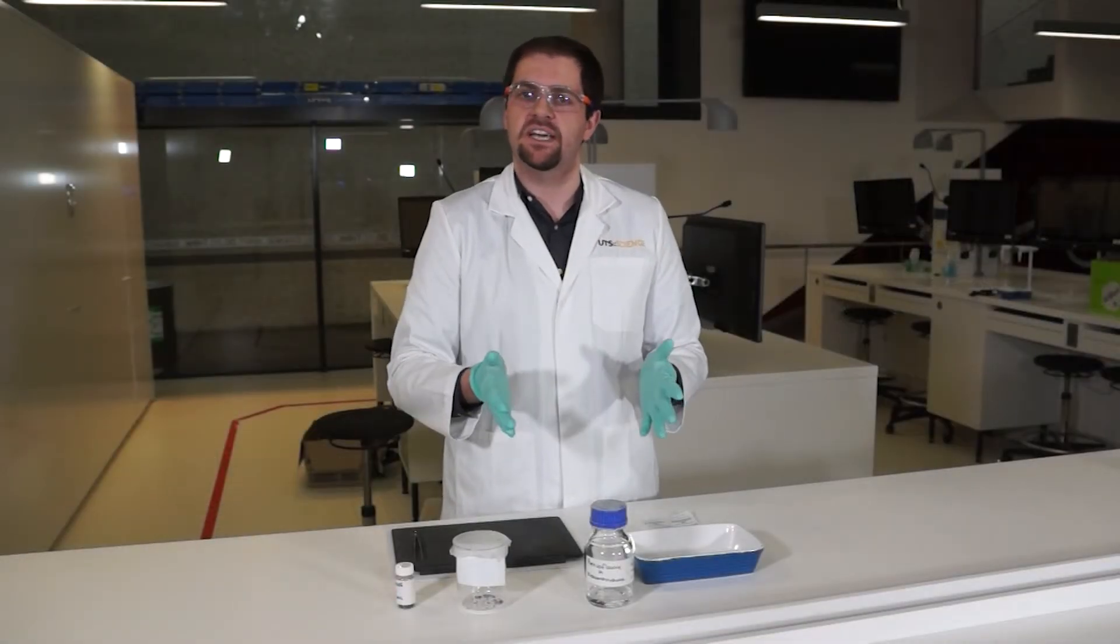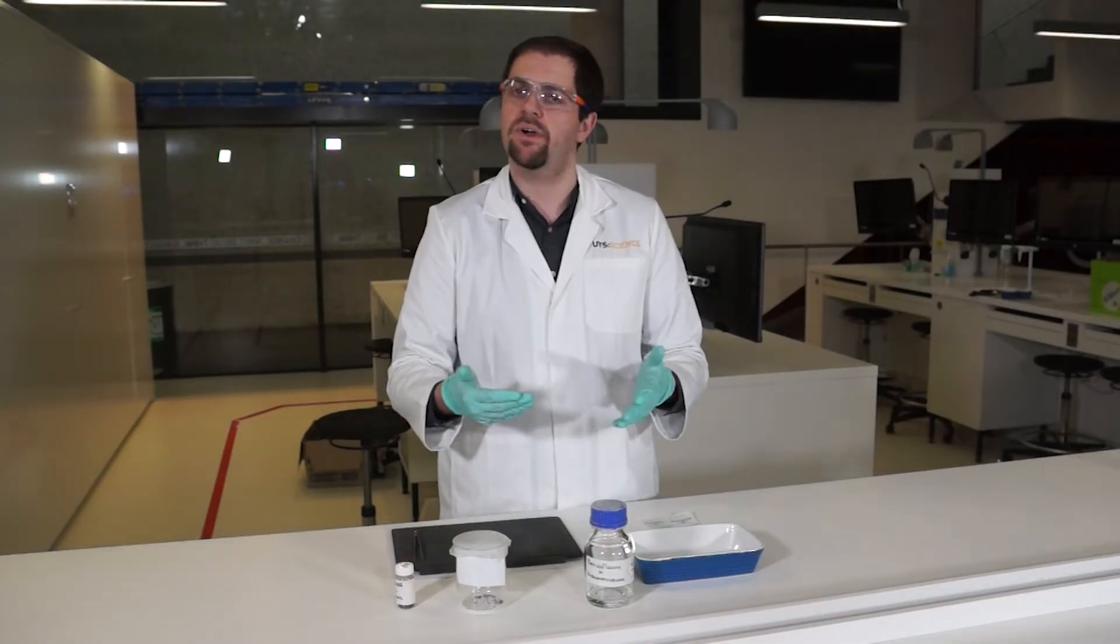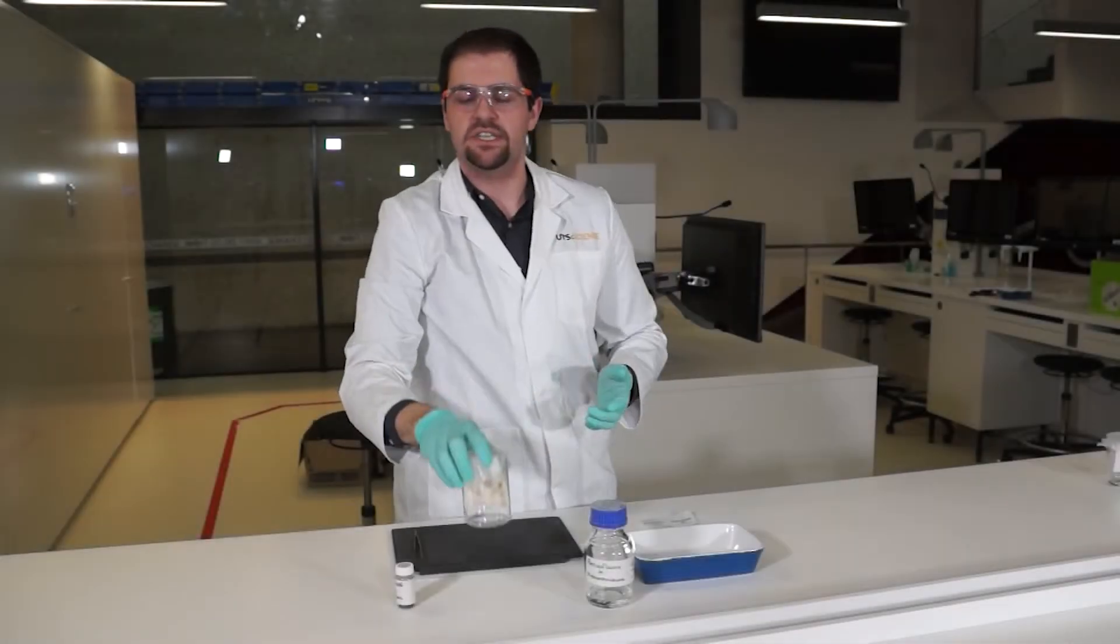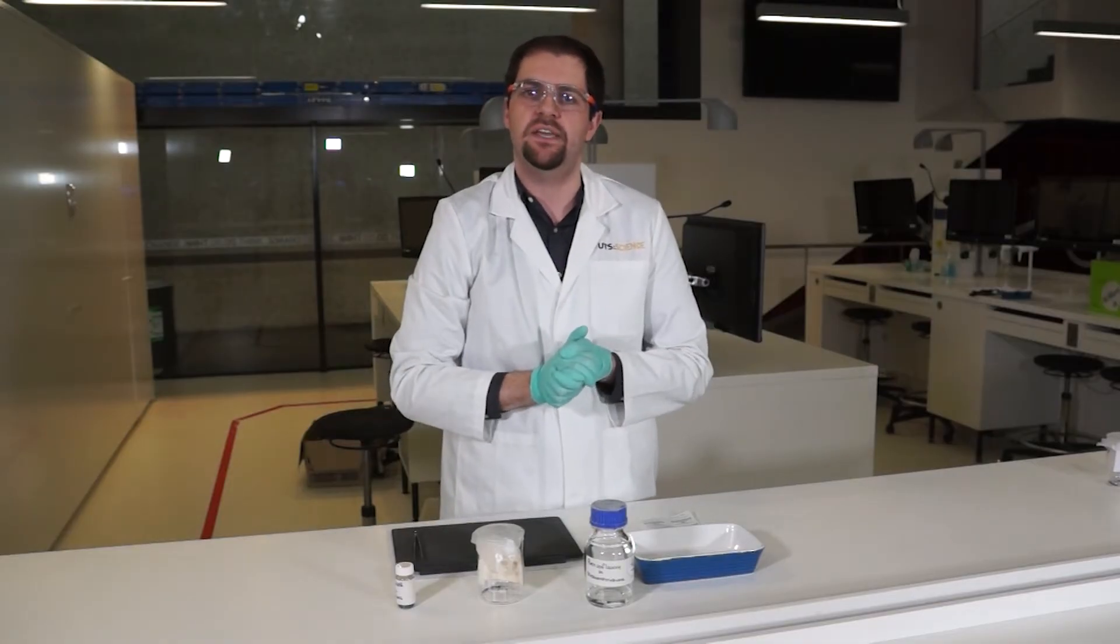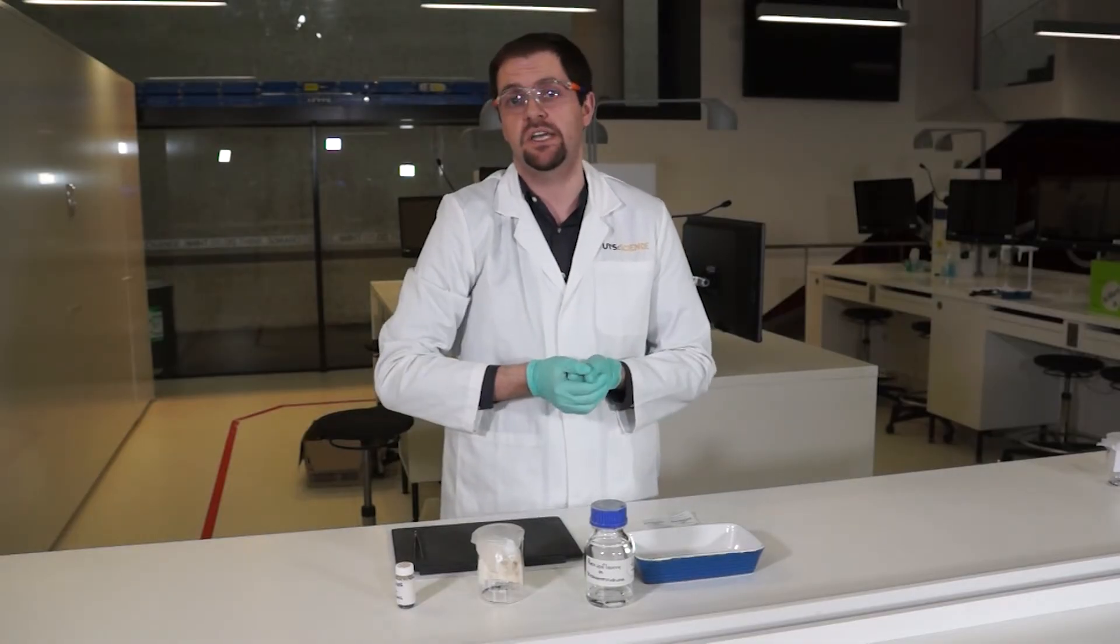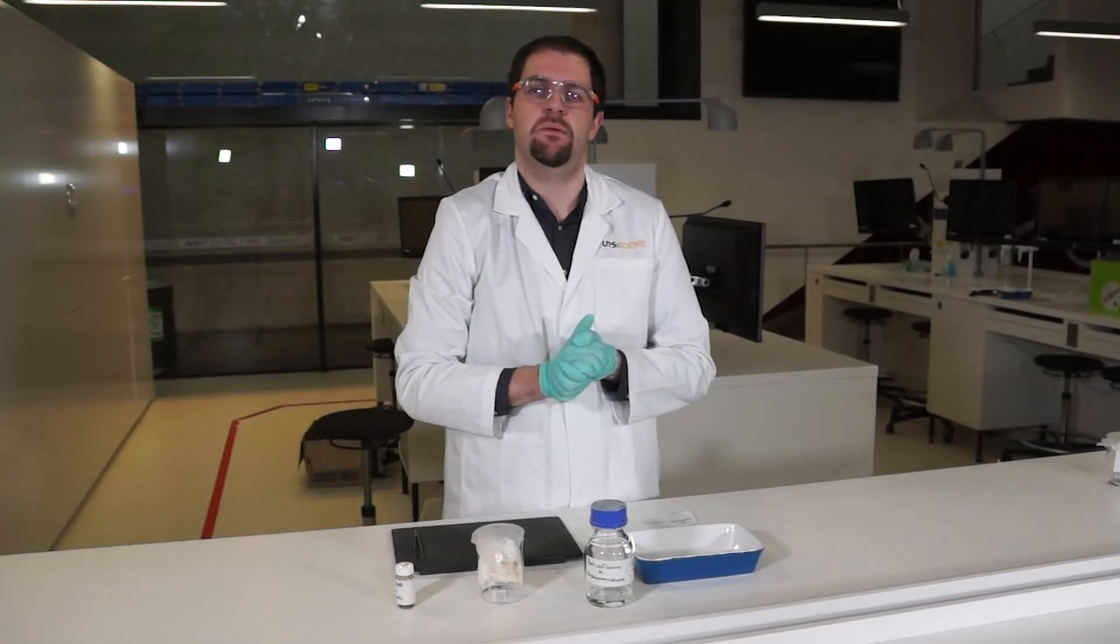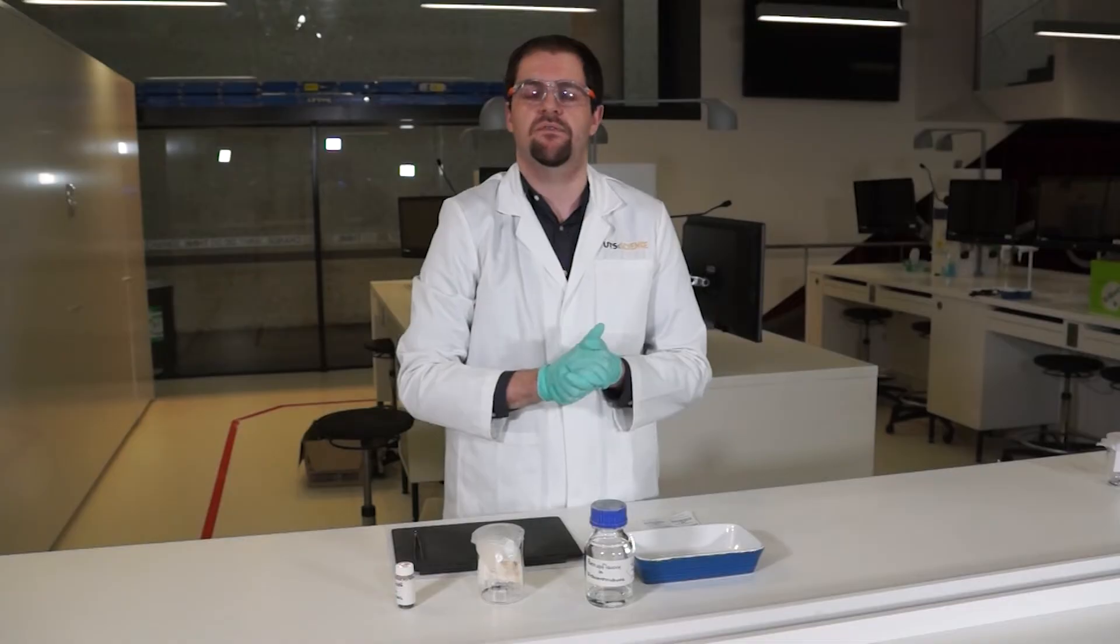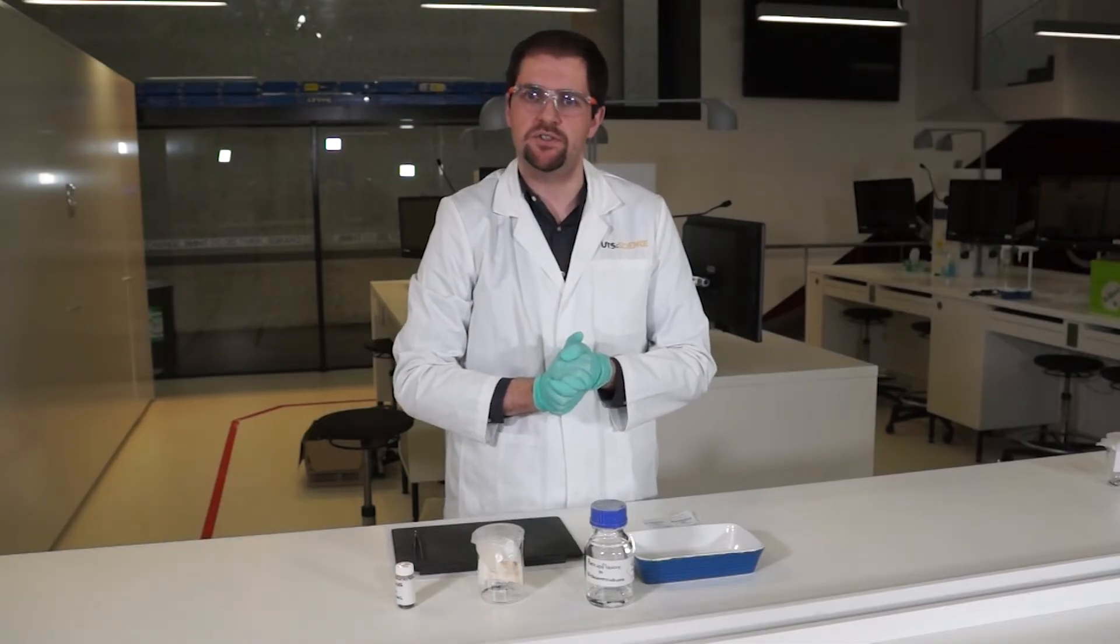The finger marks will then develop in about five to ten minutes and form a nice brown coloration on the paper. Here are some that we've developed earlier. Now if we were to take these out of the beaker, they're actually going to fade quite quickly. So if we wanted to fix these onto the piece of paper so we can photograph them for later, we apply what we call a fixing solution.